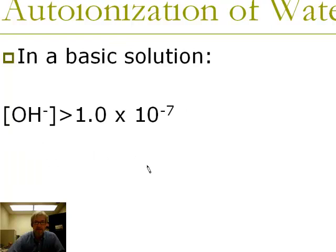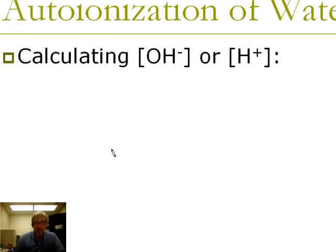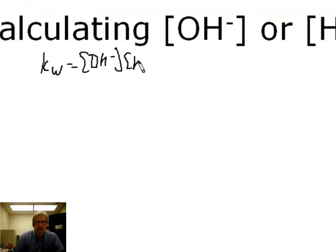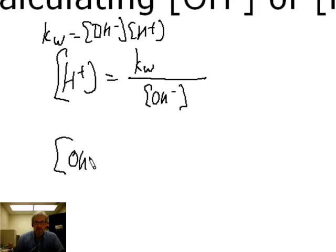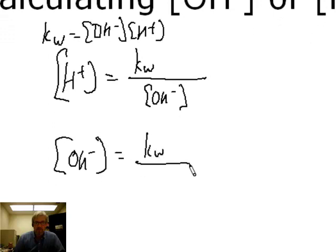By the same token, in a basic solution, the OH⁻ concentration is going to be higher than 1 × 10⁻⁷, which means the H⁺ concentration in a basic solution is smaller than 1 × 10⁻⁷. In any aqueous solution, Kw = [H⁺][OH⁻], so we can calculate [H⁺] = Kw ÷ [OH⁻], or solve for [OH⁻] = Kw ÷ [H⁺].